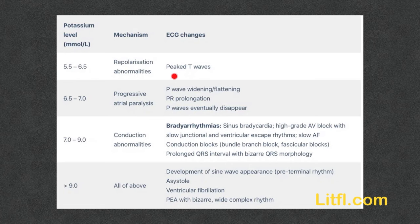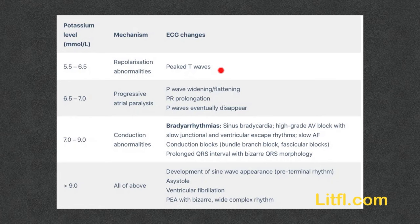The earliest change we usually see is the peaked T wave. In hyperkalemia, the peaked T wave is typically narrow, pointed, and sharp — compared to the peaked T wave of acute coronary syndrome. I will have some examples to show you.